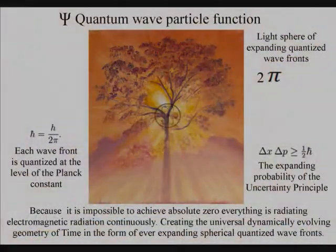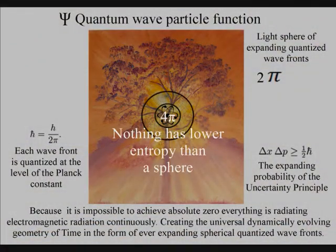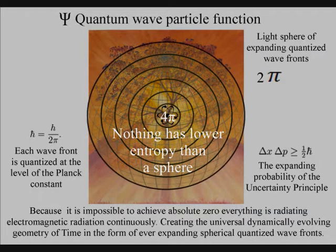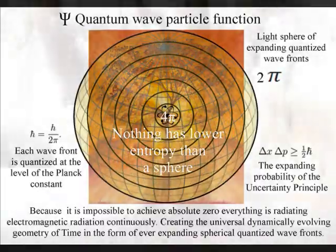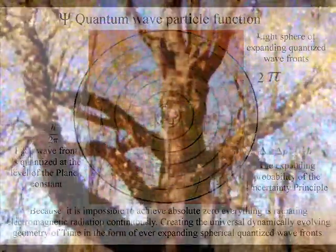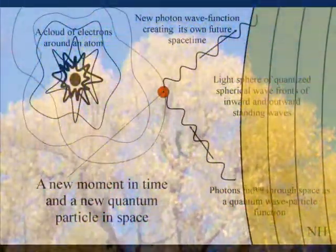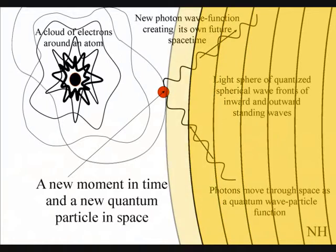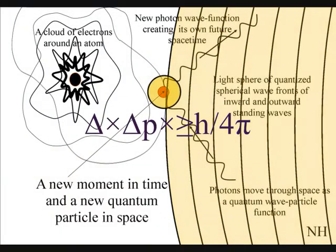The second law of thermodynamics falls out of this theory. The organization for the spontaneous disorganization of entropy is formed by the spherical symmetry of the quantum wave particle function. The spontaneous absorption and emission of light forms the flow of time, with photon energy cascading down, forming greater degrees of freedom for the flow of entropy.